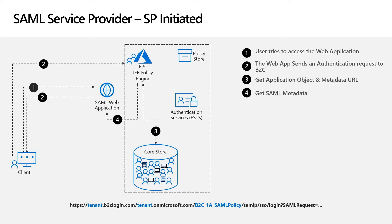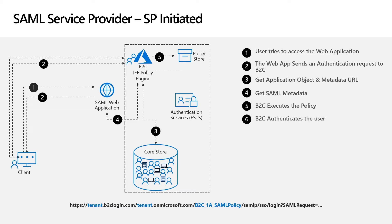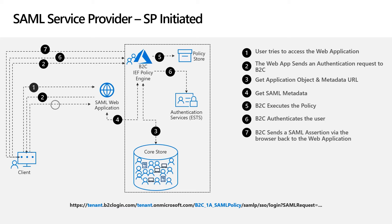B2C uses that metadata to determine how the SAML response should be returned — for example, whether it will be signed. The B2C policy engine then looks up the policy using the policy name from the URL to determine what the user journey should look like. B2C then requests the user to authenticate against its local directory, and on a successful authentication, a SAML assertion is sent back to the application.